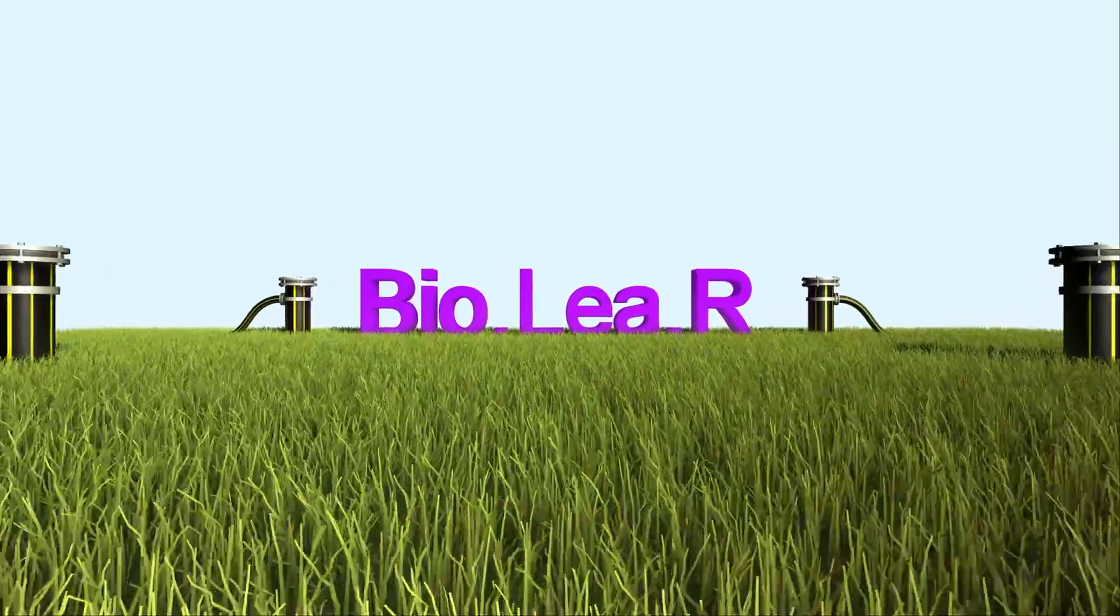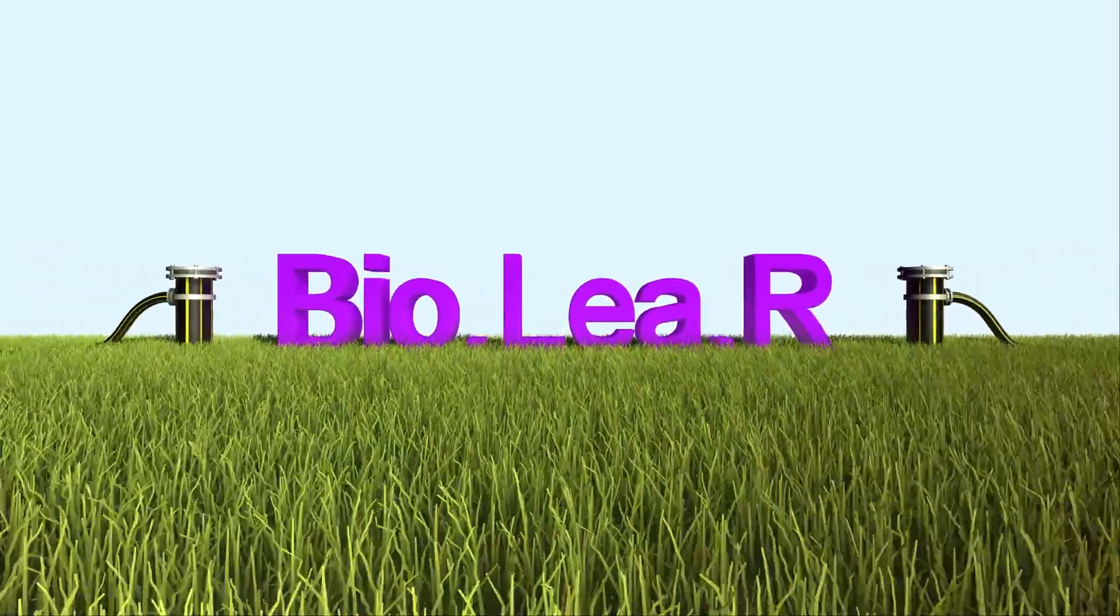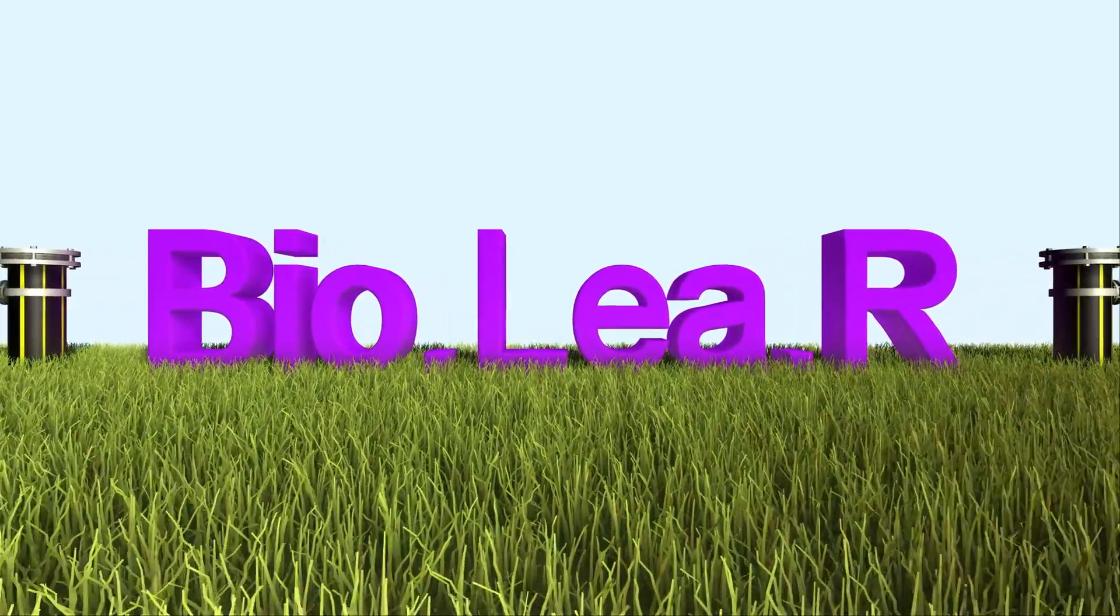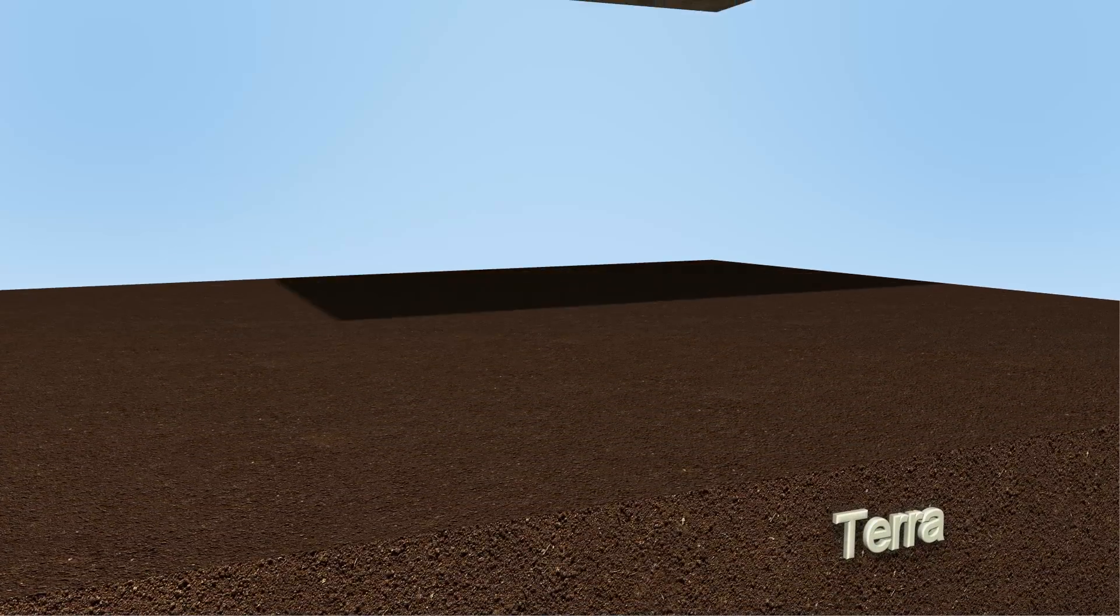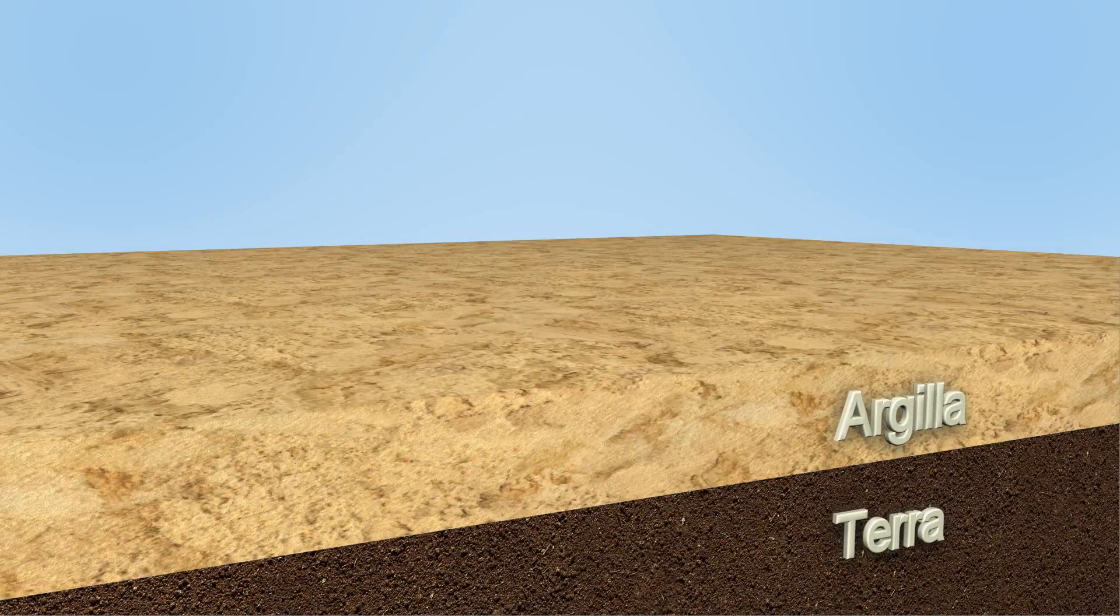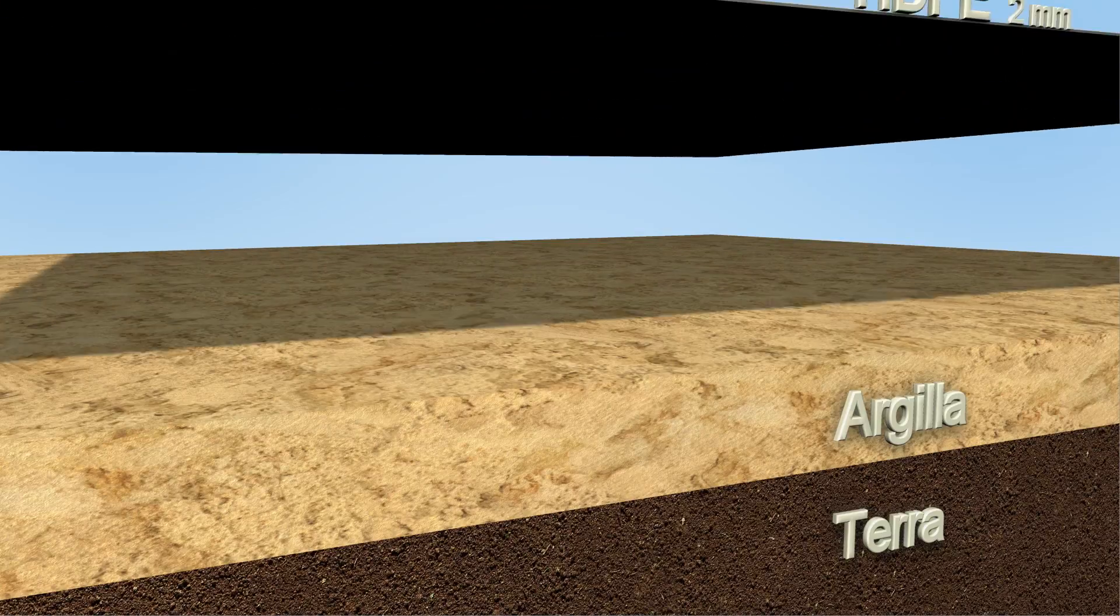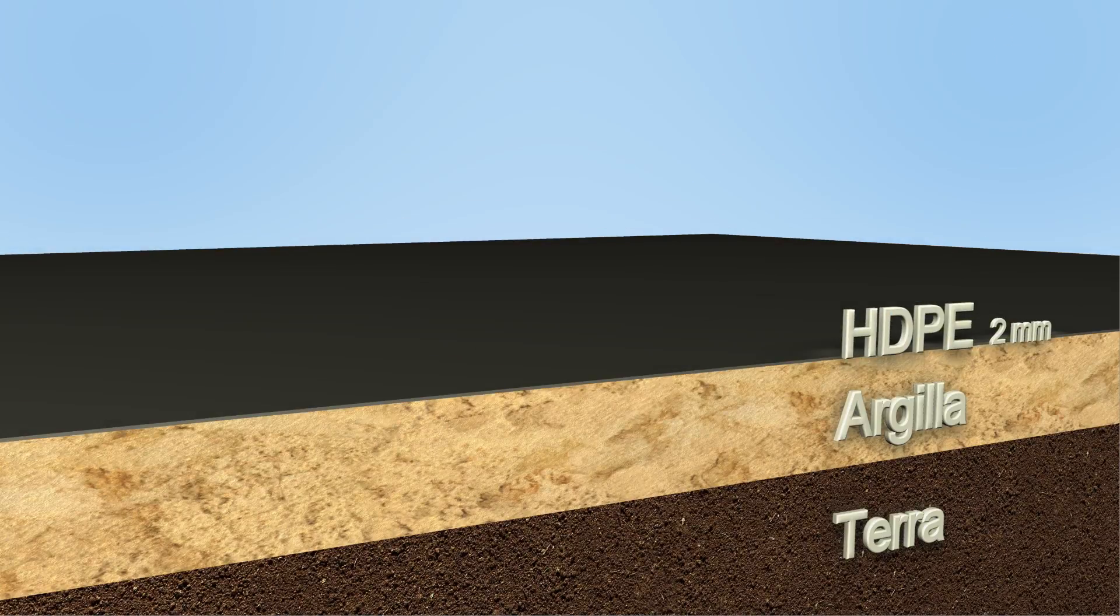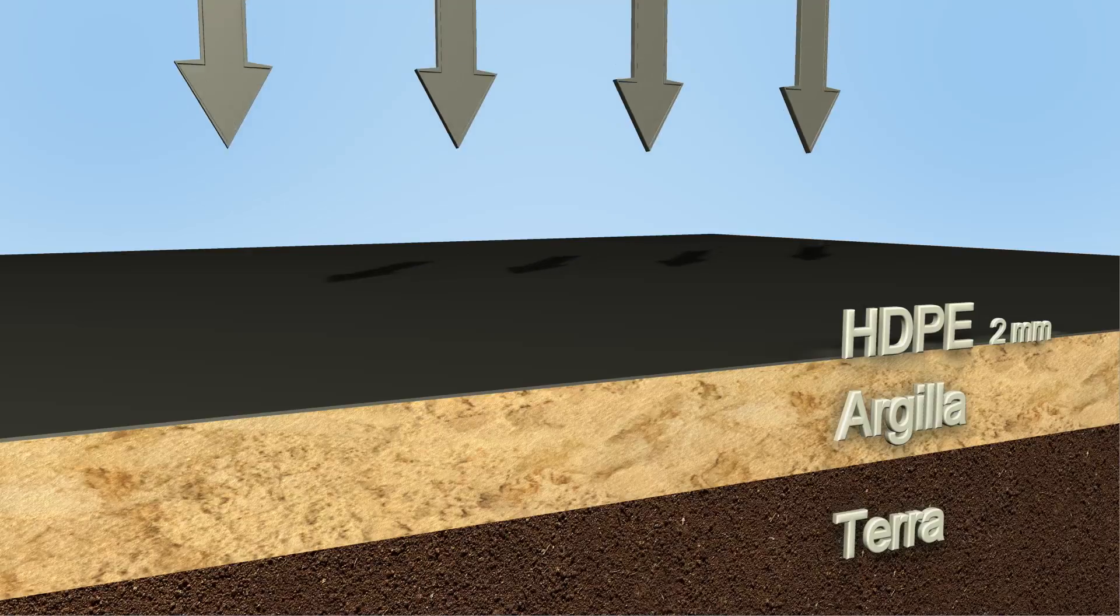Bio-Liar is a full-scale test of an innovative landfill management. Traditional landfills are built with a thick layer of clay and a high-density polyethylene ground cloth, which prevents soil contamination due to leachate infiltrations, the pollutant produced by waste.